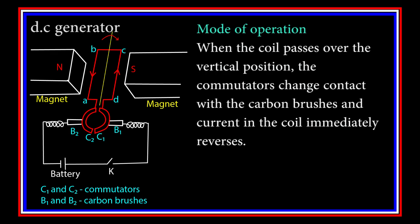When the coil passes over the vertical position, the commutators change contact with the carbon brushes. The current in the coil immediately reverses.